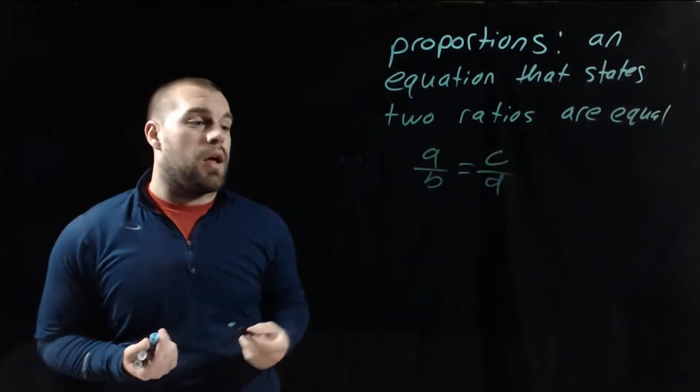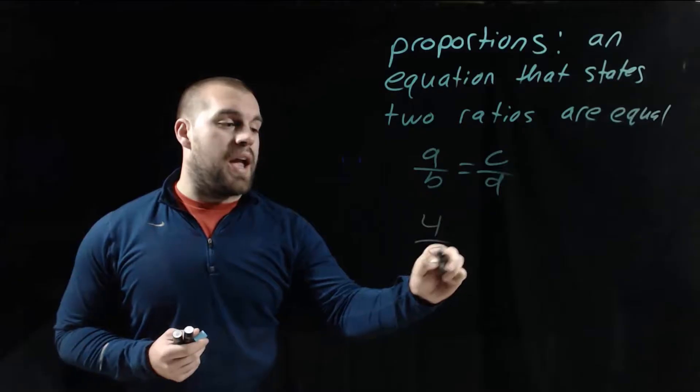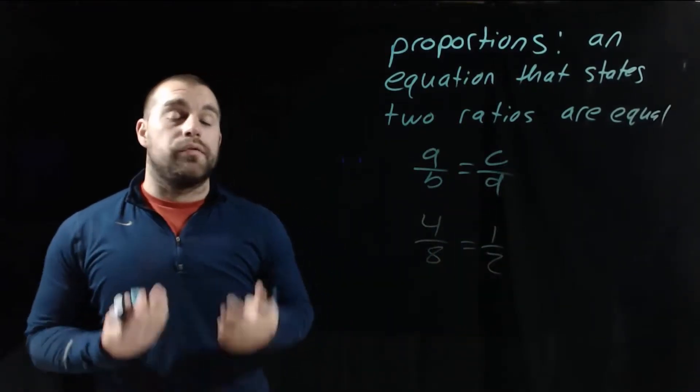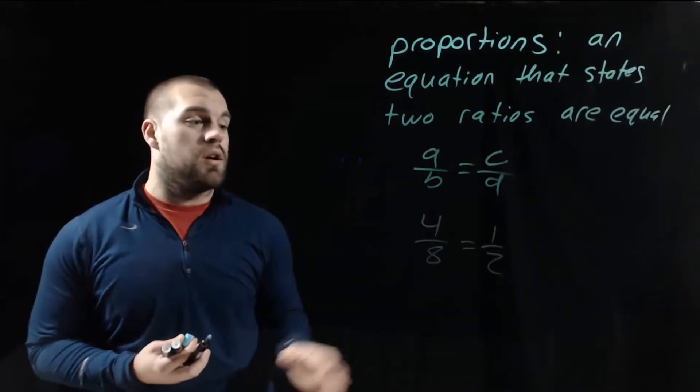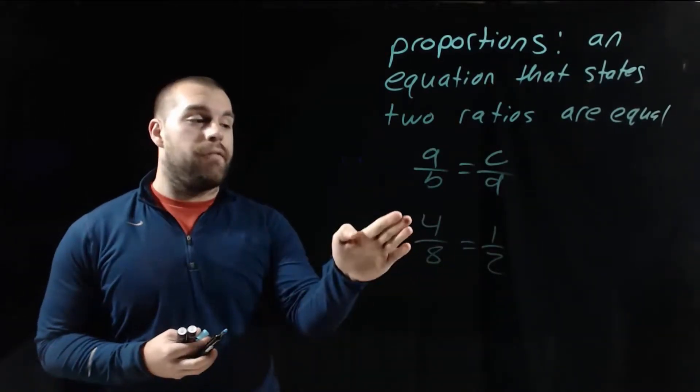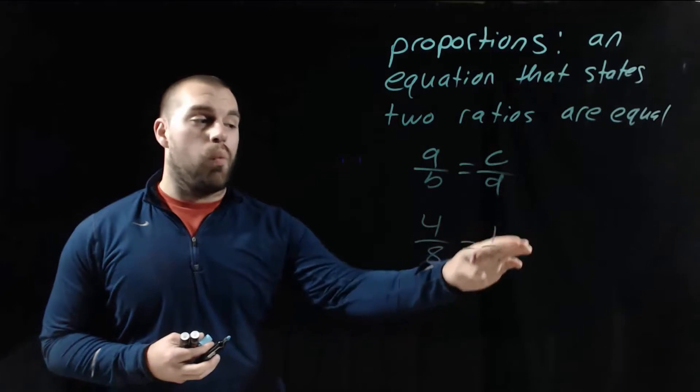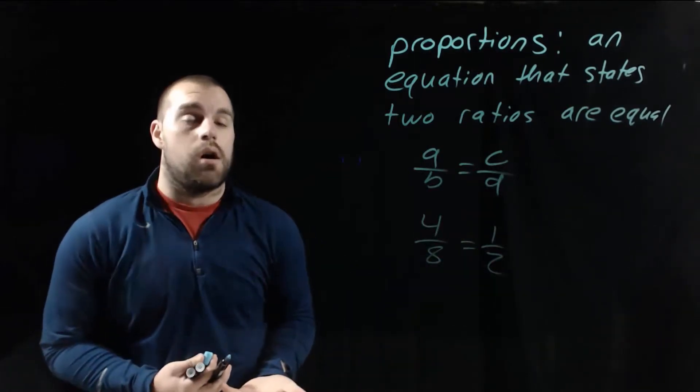So this would be something like 4 over 8 is equal to 1 over 2. Those fractions have the same value. It's just the second one is the reduced down version. 4 divided by 8 would be 0.5, 1 divided by 2 would be 0.5. So those things are the same.